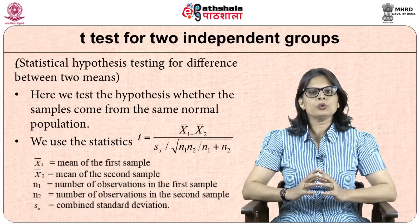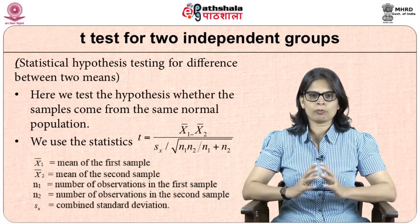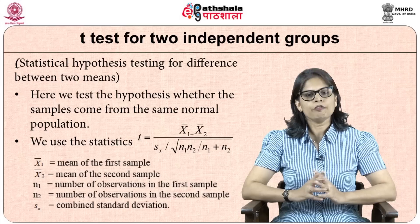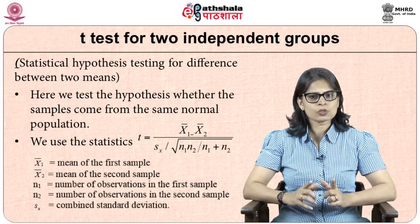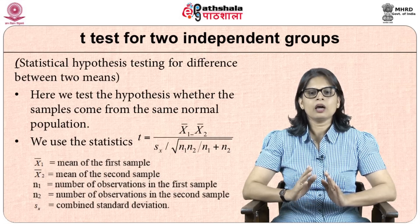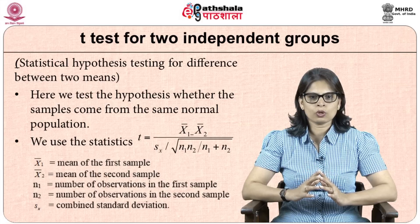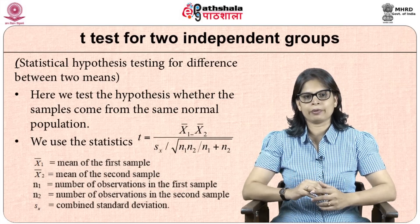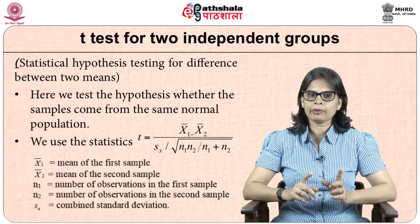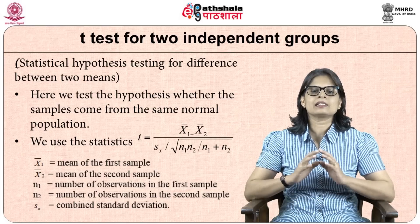For the t-test for two independent groups, we test whether the samples come from the same normal population. The statistic is t equals (x1-bar minus x2-bar) divided by s-x times the square root of (n1 times n2) divided by (n1 plus n2). Here x1-bar is the mean of the first sample, x2-bar is the mean of the second sample, n1 and n2 are the number of observations in each sample, and s-x is the combined standard deviation.